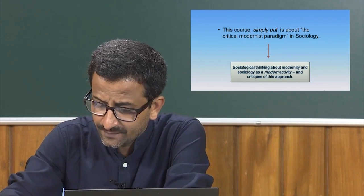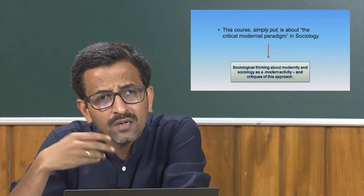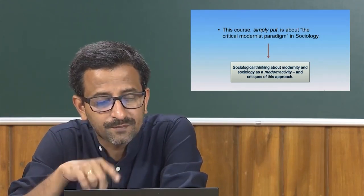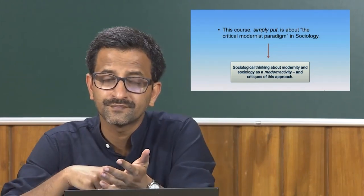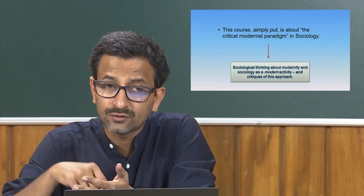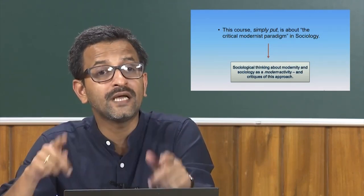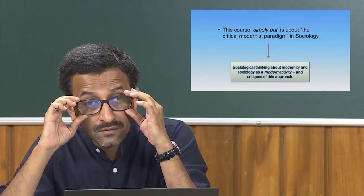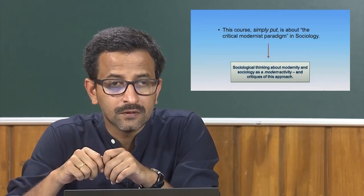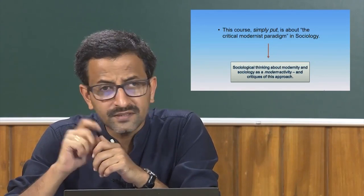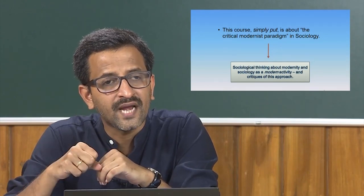This course is about the critical modernist paradigm in sociology — sociological thinking about modernity, under what circumstances it emerged, and why sociology is a modern activity. It is also very important to question positivism, because positivism has strengthened the hands of scientism — scientific reductionism.